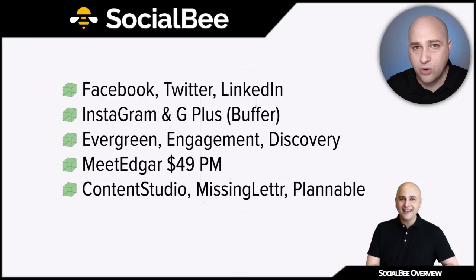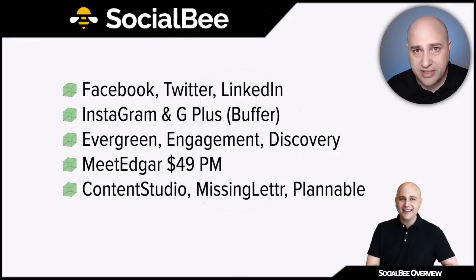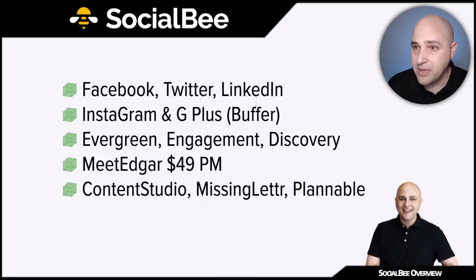That brings me to Plannable and Amplifier. Plannable is really good for going in there, writing your social media posts, having a team audit them or a client approval process, and then posting. There's no reposting or recycling bucket. The same goes for Amplifier — Amplifier and Plannable are very similar that way. When Amplifier came out they said they were going to build an evergreen feature and they totally flaked out. I'm glad SocialBee is here and I've already got it working for me.